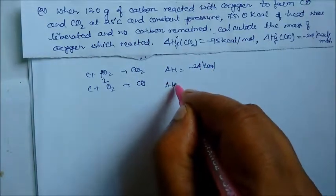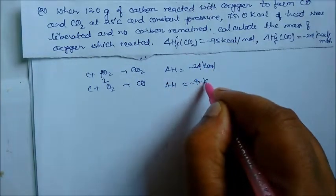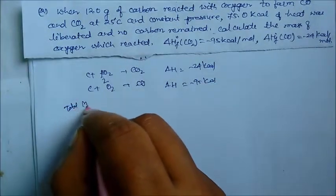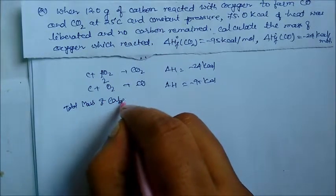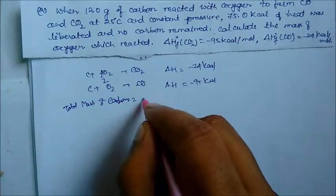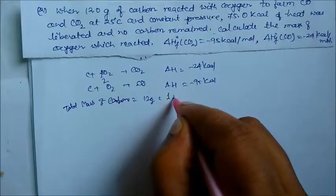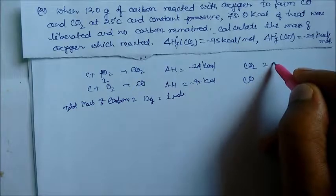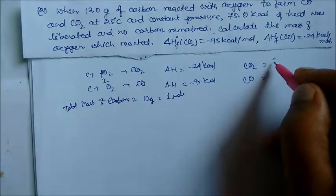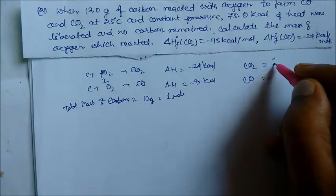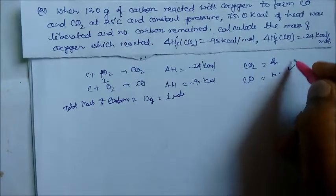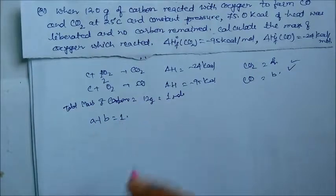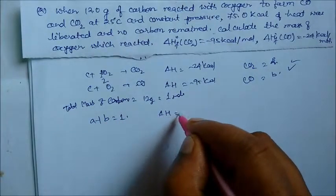Delta H for carbon dioxide is minus 95 kilocalorie and for carbon monoxide minus 25 kilocalorie. The total mass of carbon is 12 grams, which is 1 mole. We take the moles of CO₂ as A and moles of CO as B, so A plus B equals 1.